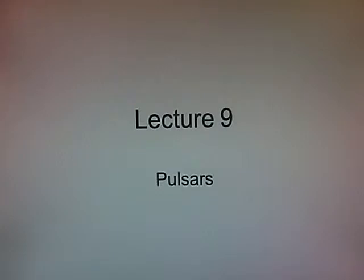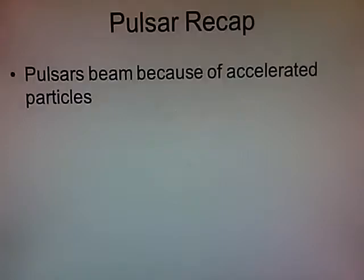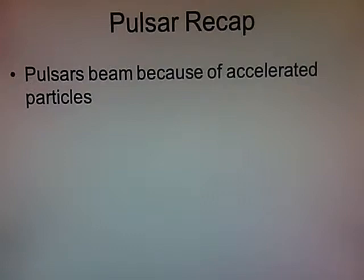The first thing I want to do is quickly revisit a few topics and make sure we're all on the same page. Remember that one of the most exciting things about neutron stars is that they can become these really accurate clocks which pulse. That's coming from these accelerated particles looping around and creating this beaming effect of radiation, which then sweeps over the observer every time that neutron star rotates.